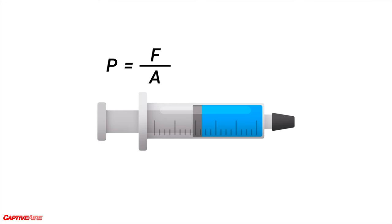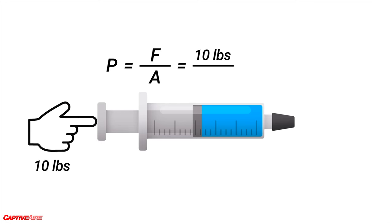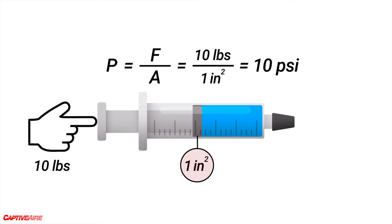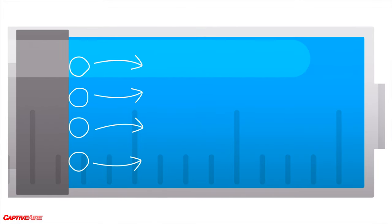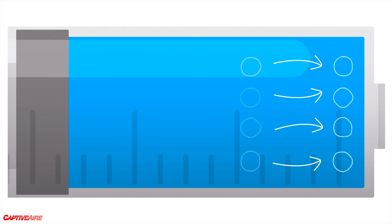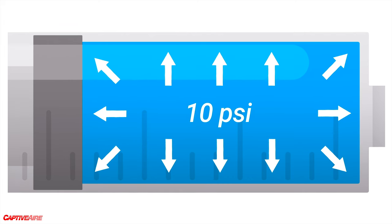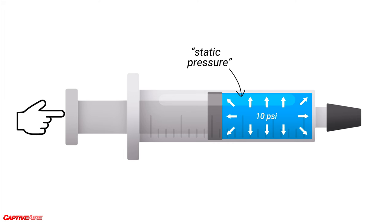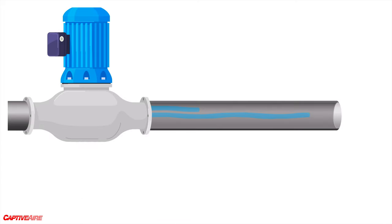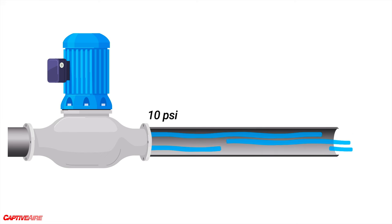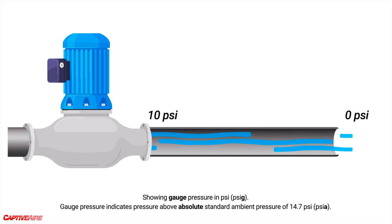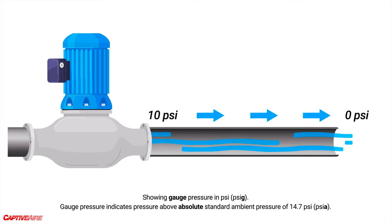Pressure — or more specifically a pressure difference — is what makes the fluid move through the pipe in the first place. Pressure is a force exerted over a certain area. A simple example is a syringe filled with fluid. If I apply 10 pounds of force on a plunger with an area of 1 square inch, that's 10 psi. Those molecules push into other molecules, and this pressure of 10 psi is transmitted to all the walls in the syringe — everywhere we measure, the force will be 10 pounds per square inch. This is called static pressure.